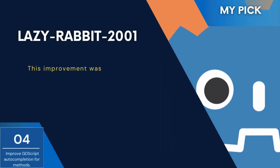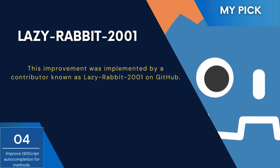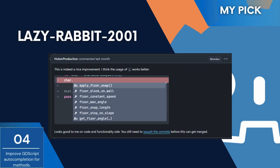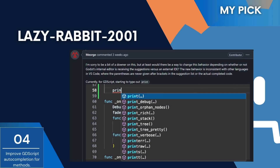Let's now talk about an exciting enhancement in GDScript: improved autocompletion for methods. This update significantly boosts coding efficiency by providing more accurate method suggestions as you type. It minimizes errors and streamlines the development process, making coding in Godot even more enjoyable. This improvement was implemented by a contributor known as LazyRabbit2001 on GitHub, making coding in Godot smoother and even more intuitive.